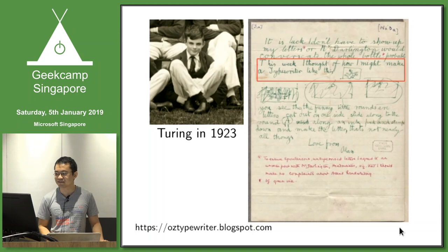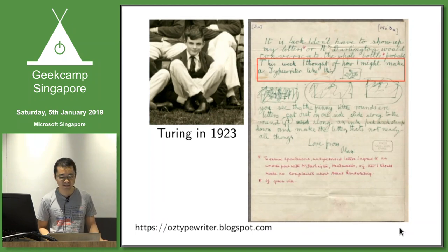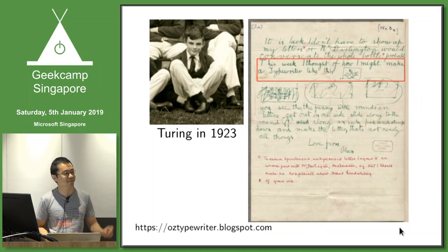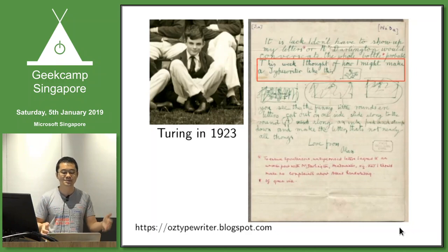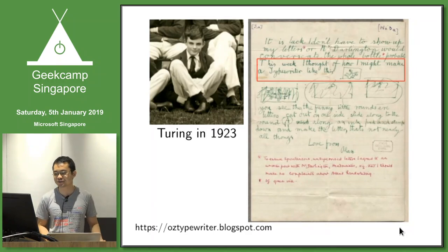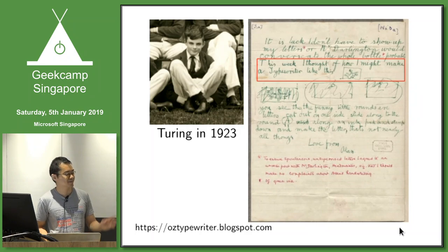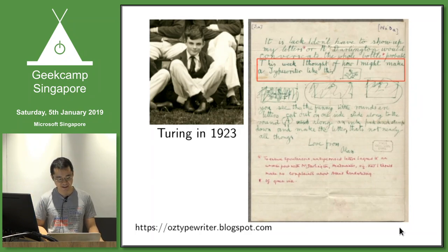In the letter, highlighted in the red box, he wrote: 'This week I thought of how I might invent a typewriter.' He goes on to describe how he's going to invent a typewriter. On the left is a picture of Turing in 1926 when he was 14 years old; the letter was written when he was 11.